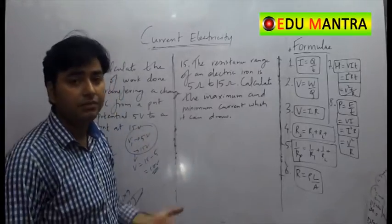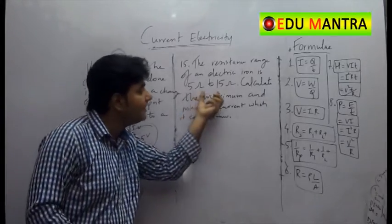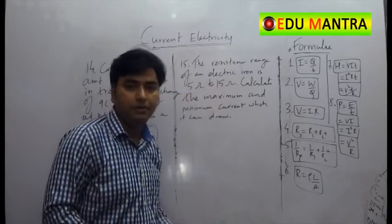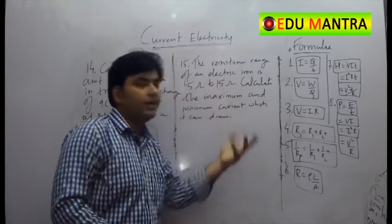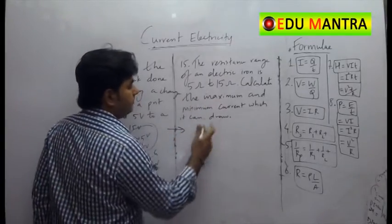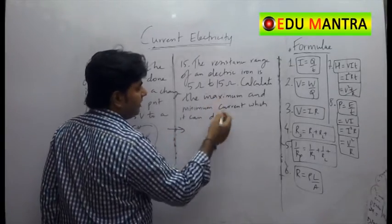So when the current is maximum, the resistance is minimum, and when the resistance is maximum, the current is minimum. So we know that relation. So here, we can definitely find the current.